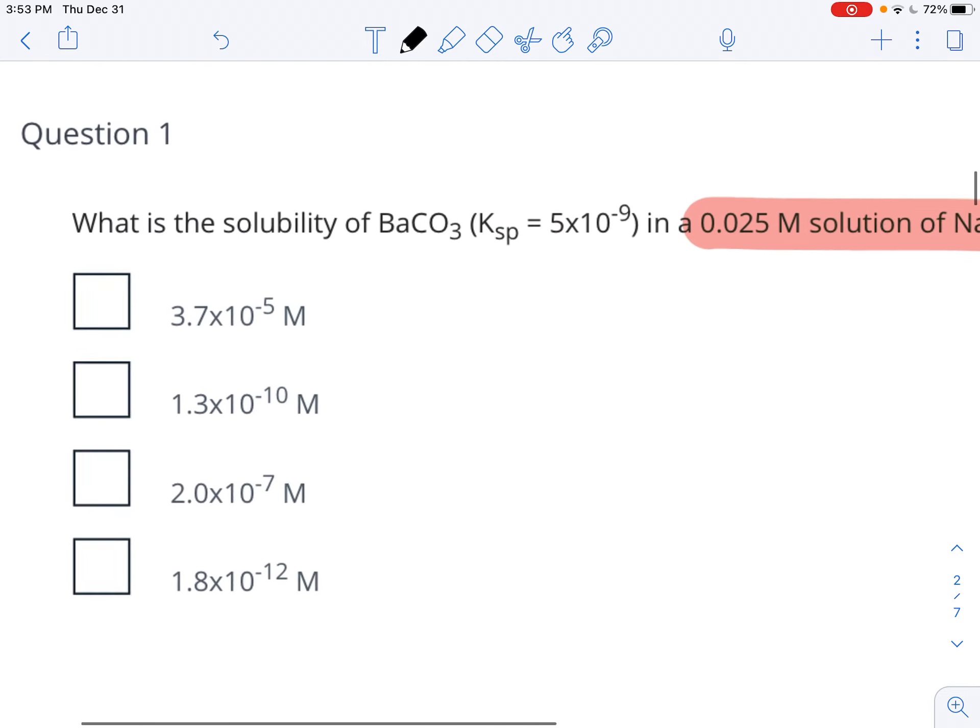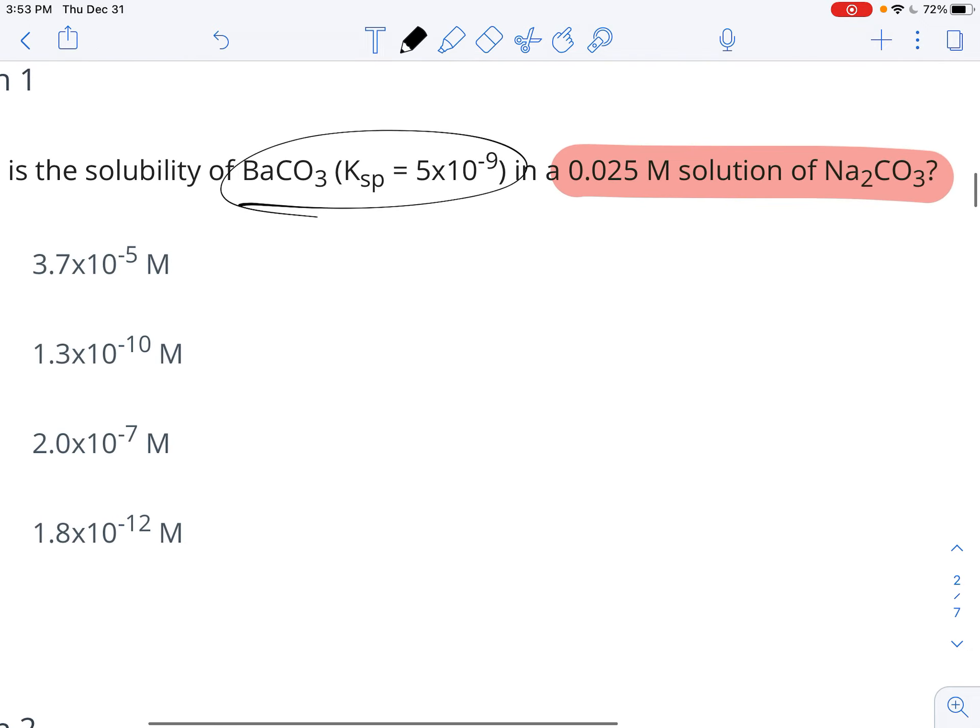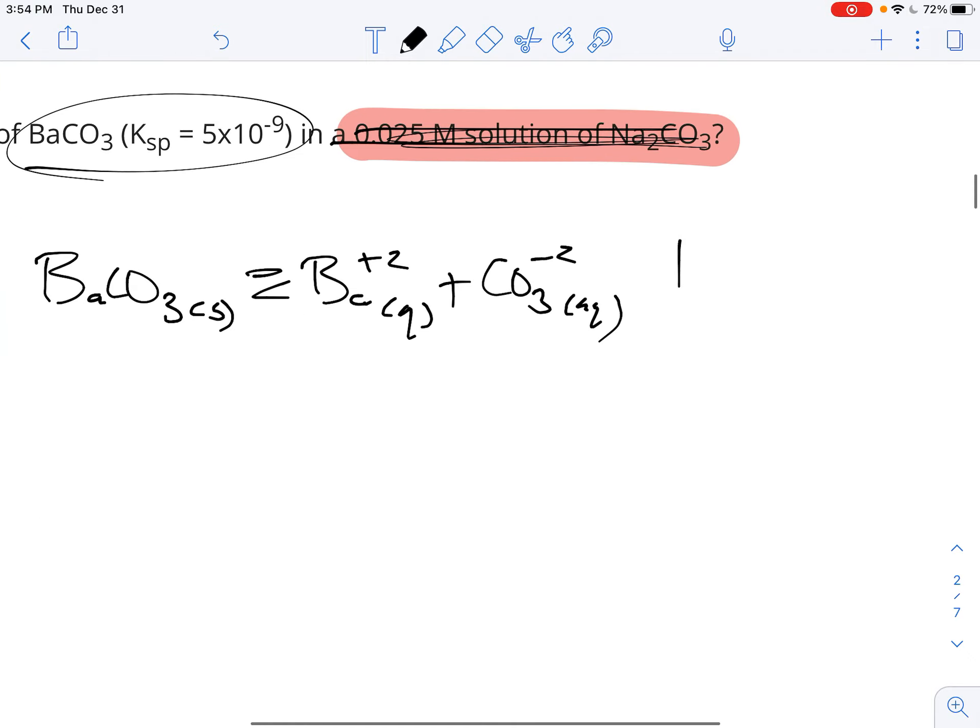Now, what does this have to do with anything? If we ignore that for just a second and we look at the KSP of the barium carbonate, then what we're going to do is take a solid barium carbonate and dissociate it into the barium ions and the carbonate ions.